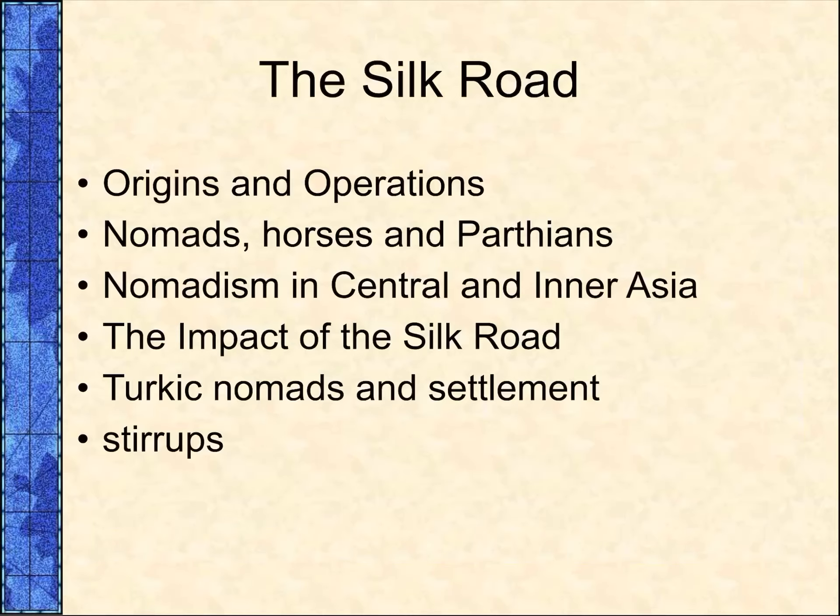China exported peaches and apricots, spices, and manufactured goods including silk, pottery, and paper — silk being probably the main product for them.